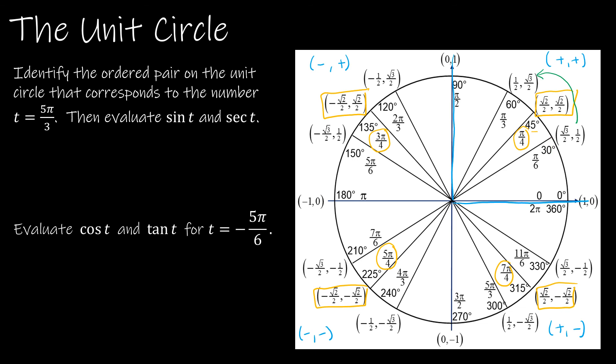So here's why this is so great. If I want to say, take a look at sine of t and secant of t for some value of t, well, t is 5π over 3. So let's find 5π over 3 on my picture. And it's right here.